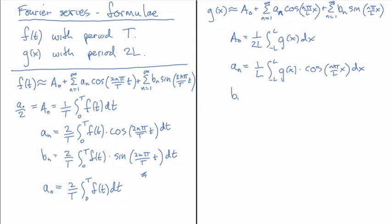And bn will be 1 over L also, integral again from minus L to L of g(x) times the sine of n pi x over L, dx.